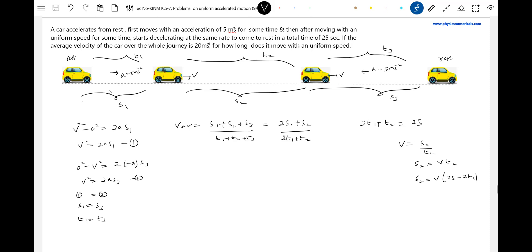We know average velocity, we know total time taken, so we'll get total distance covered. Let me write S1 plus S2. V average equals total distance divided by total time. V average is 20, this will be 25, so S equals 25 into 20 will be 500 meters. Total distance covered is 500 meters.